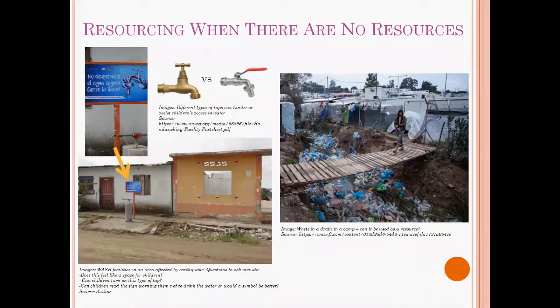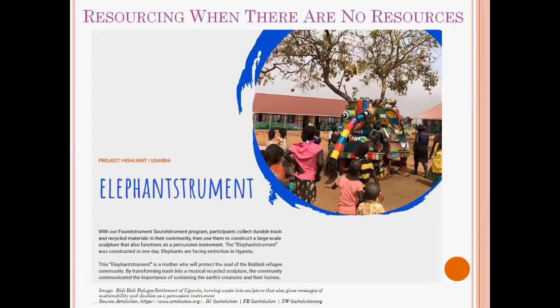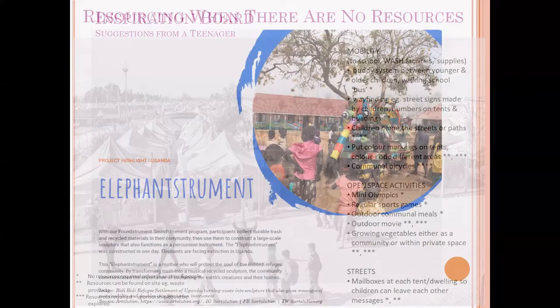In the earthquake scenario, there were taps with text saying that the water was not safe to drink and was for washing only — but it was written text, so it wasn't child-friendly signage. In terms of different tap designs from the UNICEF website, some are easy to use for young children, while others children have trouble turning. So if you want children to be able to access water — particularly to wash their hands regularly — can they actually turn the taps on and reach them? An example on the right shows waste found in a camp turned into an elephant in a Ugandan camp, with messages of sustainability and connection to elephants in the local landscape — and it also played music.